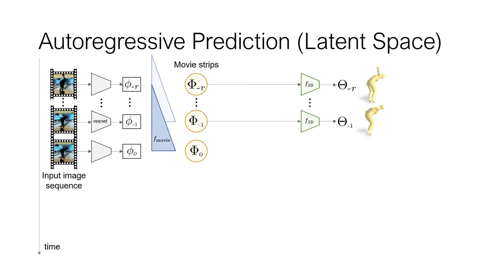In order to predict into the future, we train an autoregressive model, which is a temporal convolutional network that uses past movie strip representations to predict the next movie strip. This newly predicted movie strip then becomes one of the inputs to the next frame prediction, which may continue repeatedly in succession.